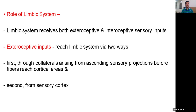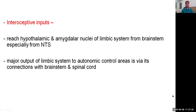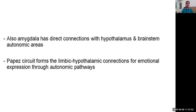The limbic system receives both exteroceptive and interoceptive sensory inputs. Exteroceptive inputs reach the limbic system via two ways: first through collaterals arising from ascending sensory projections before fibers reach cortical areas, and second from the sensory cortex itself. Interoceptive inputs reach hypothalamic and amygdaloid nuclei of the limbic system from the brainstem, especially from the nucleus tractus solitarius. The major output of the limbic system to autonomic control areas is via its connections with the brainstem and spinal cord. The amygdala has direct connections with the hypothalamus and brainstem autonomic areas, and the Papez circuit forms the limbic-hypothalamic connections for emotional expression through autonomic pathways.